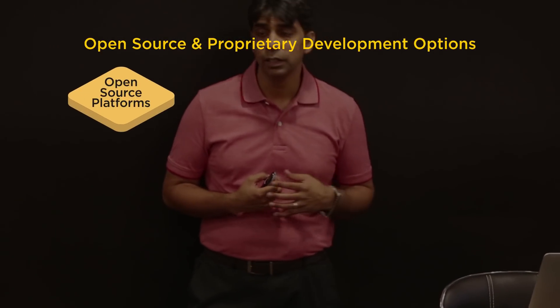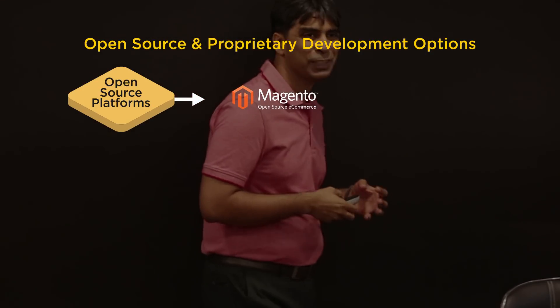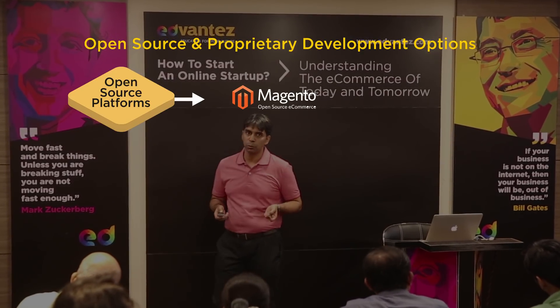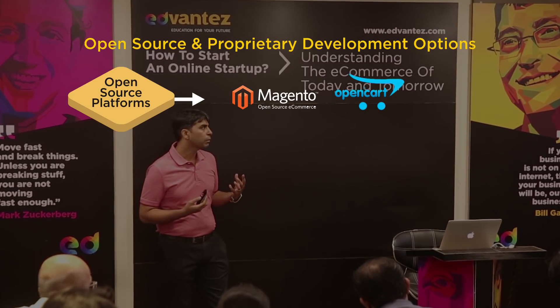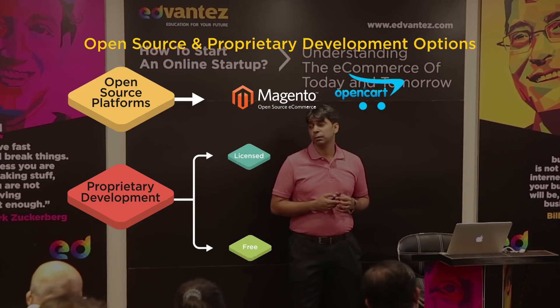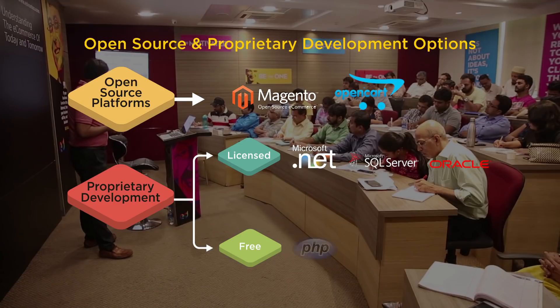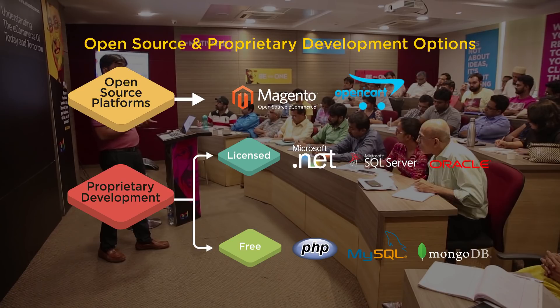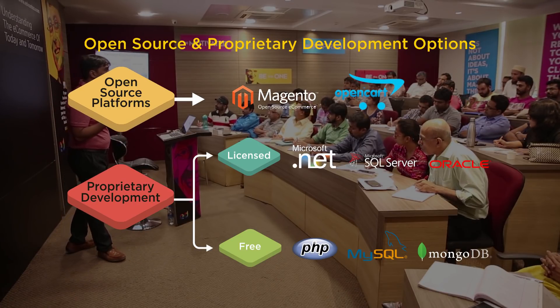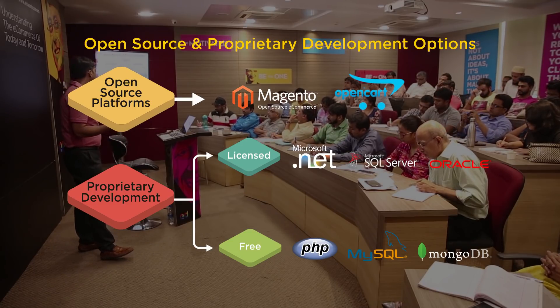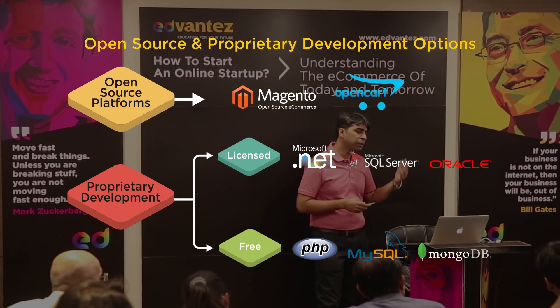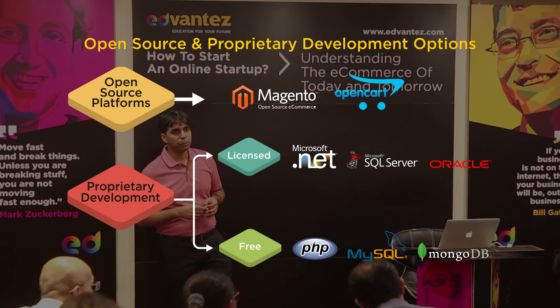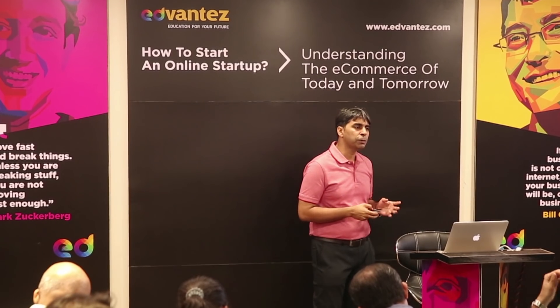Here are some examples of open source platforms versus proprietary. In open source, the most common is Magento — most developers talk about building your site in Magento — and OpenCart. In proprietary, there's licensed and free. Licensed includes .NET by Microsoft, and databases SQL Server and Oracle. In free, you have PHP — most developers if they're not using open source will use PHP. MySQL is a database for PHP, and MongoDB is another database type. Just know these are the terms for how you'd decide which way to go.